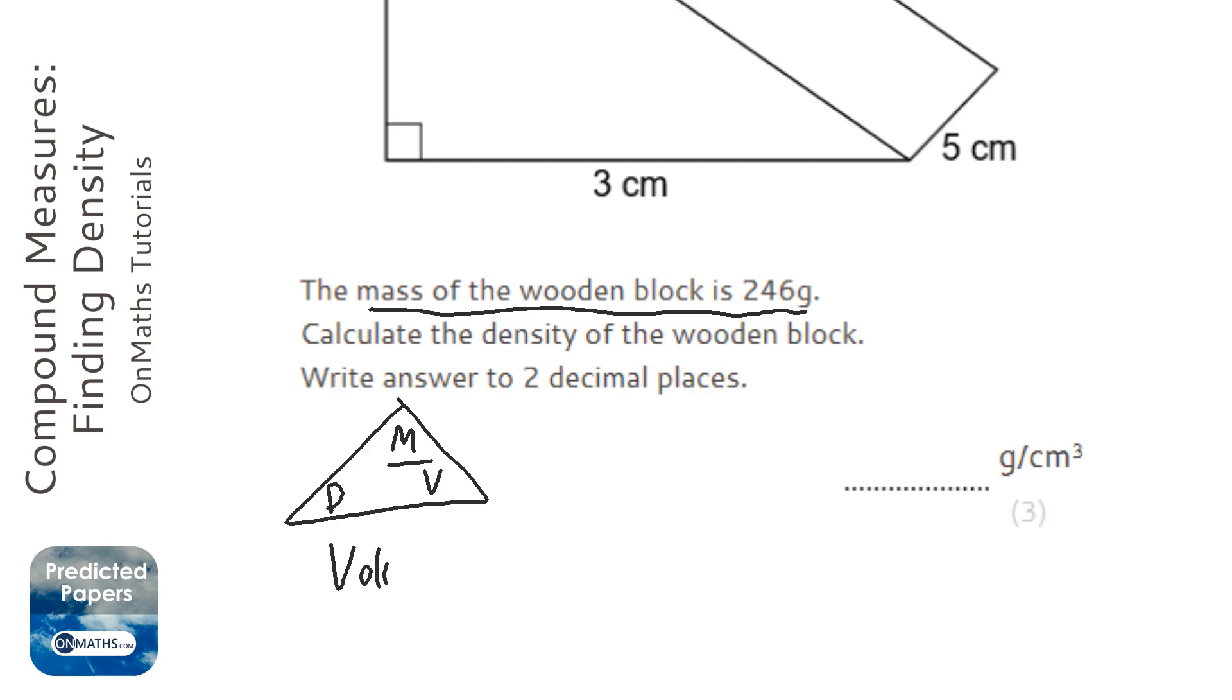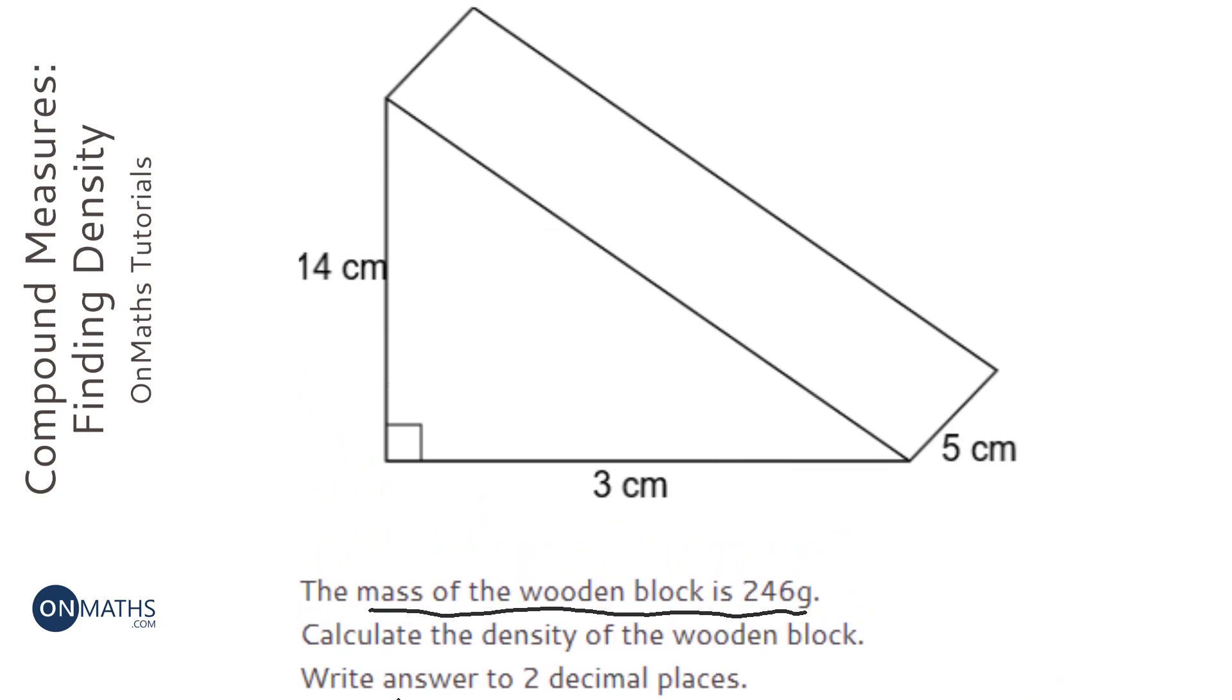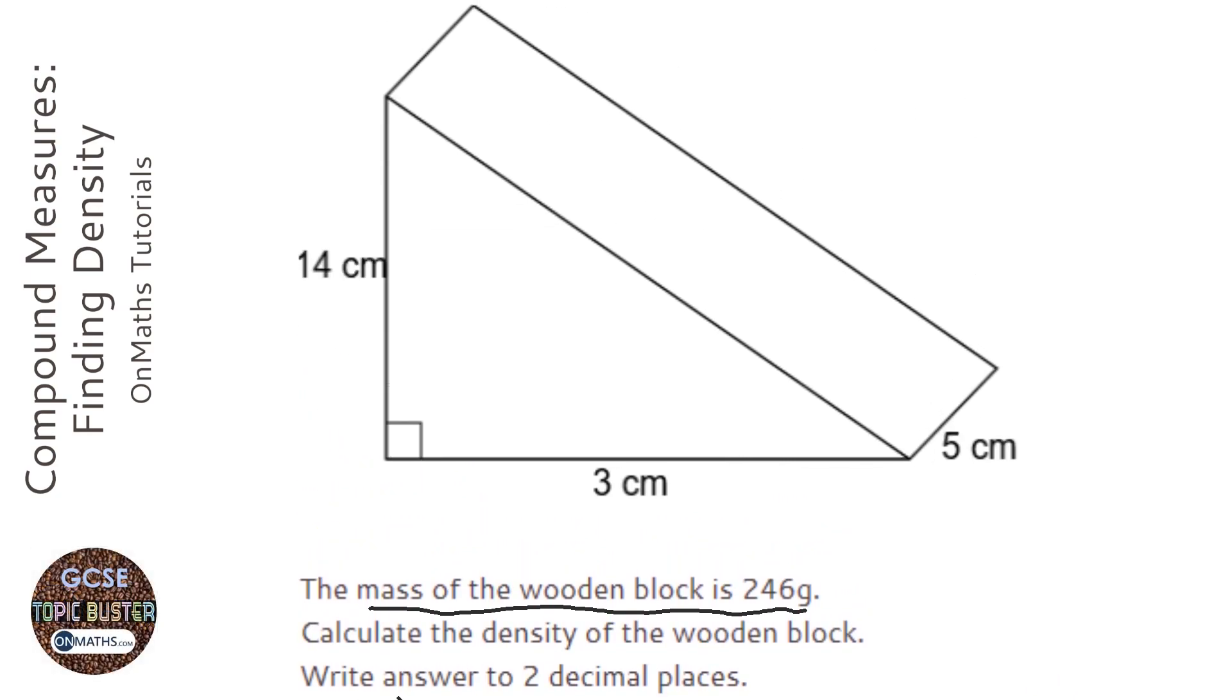To work out the volume of a prism, we're going to do the area of the cross section times the length. Now let's have a look at the shape. The cross section is a triangle with base 3 and height 14.